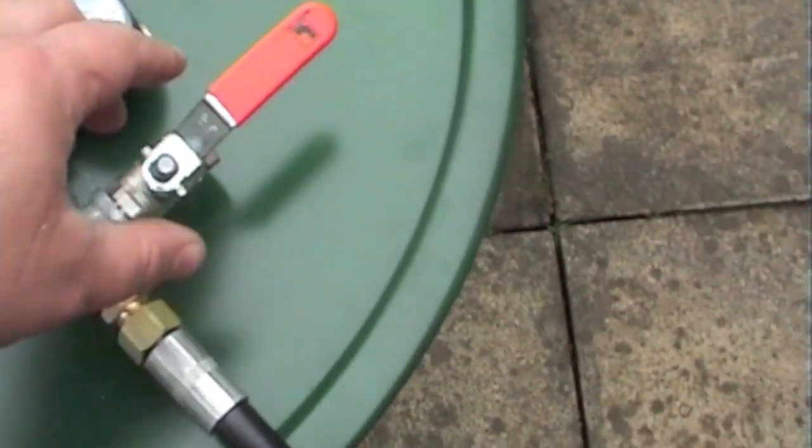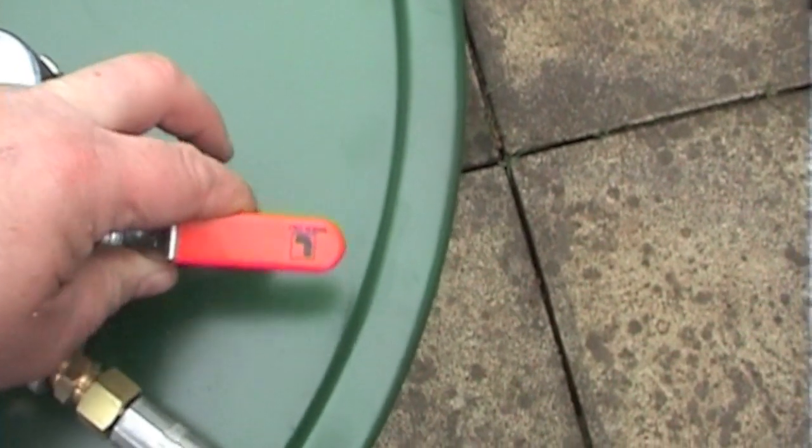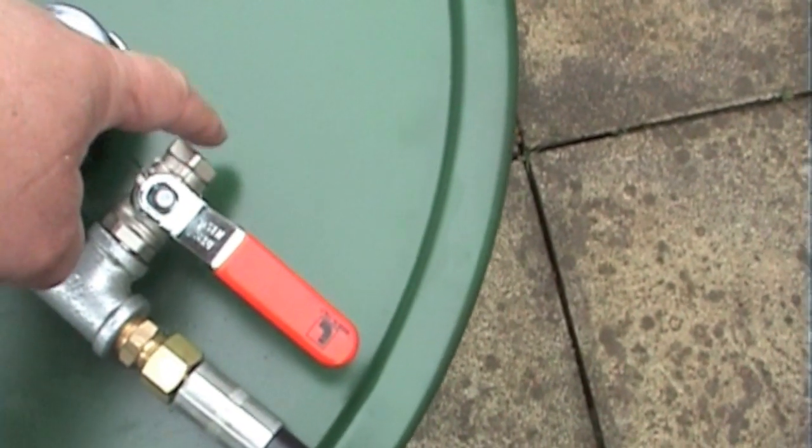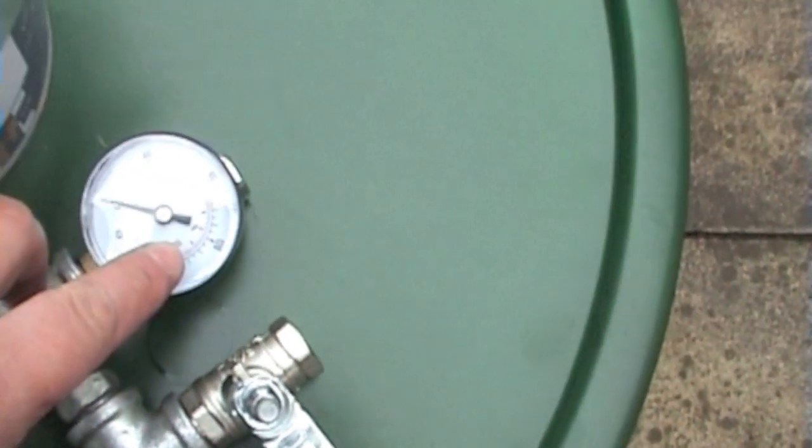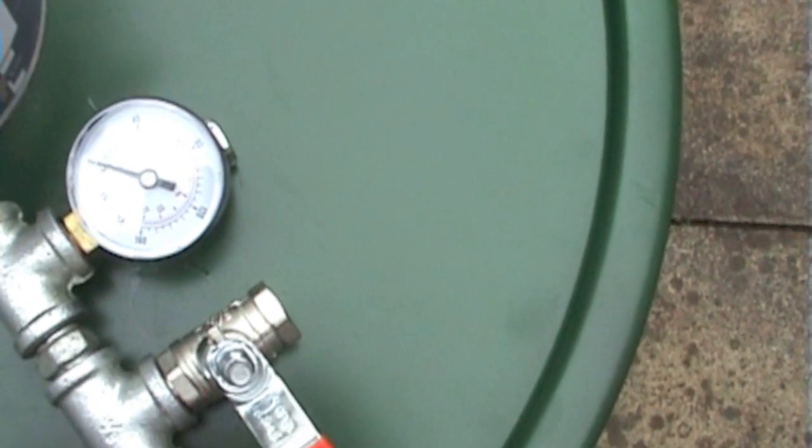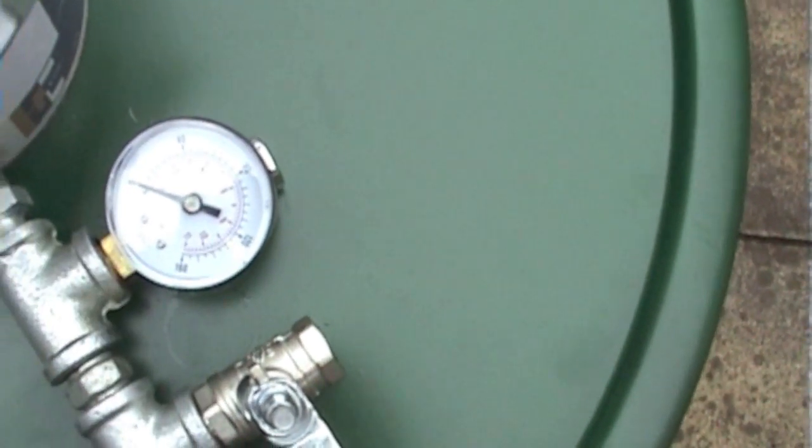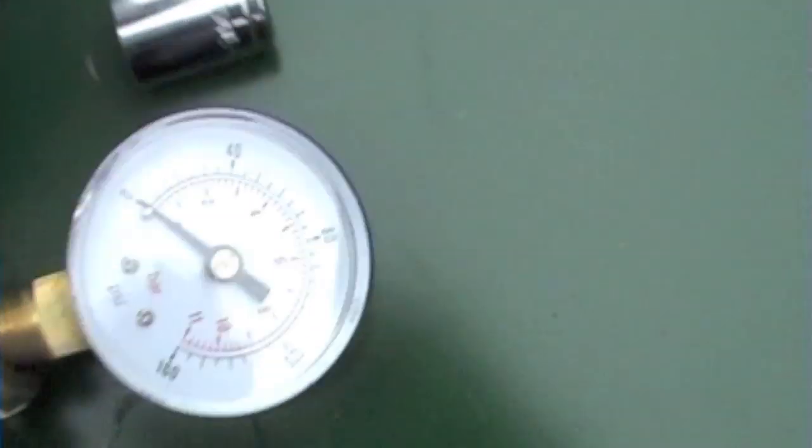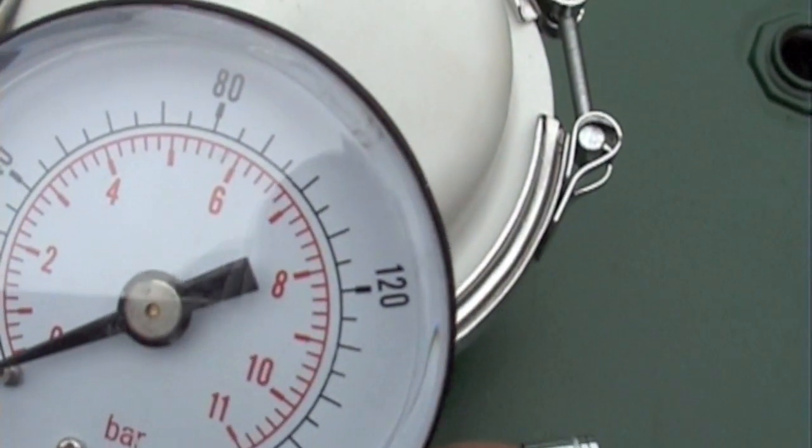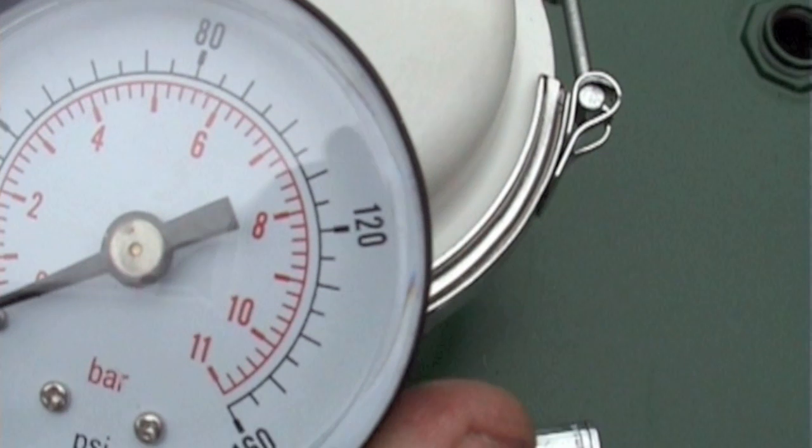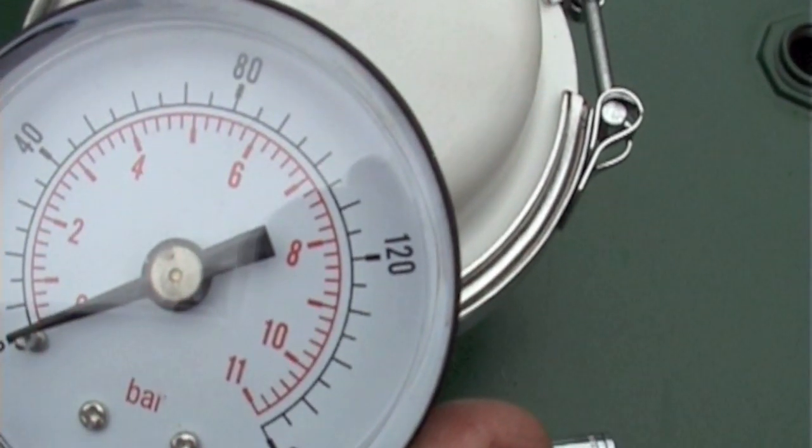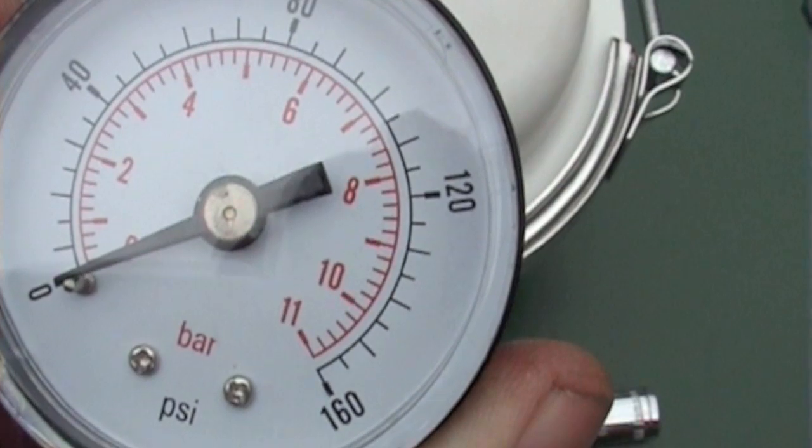So what you'll do, you'll have your overflow pipe coming from here going back into the drum. And when that reads, so you'll have it fully open, close it slowly. And when it reaches nine bars, between the eight and the ten in red, that's your optimal working pressure, nine bars.